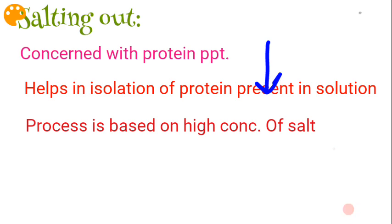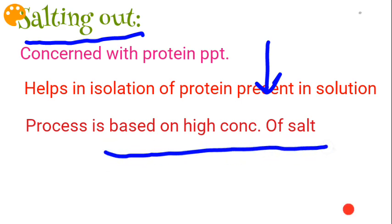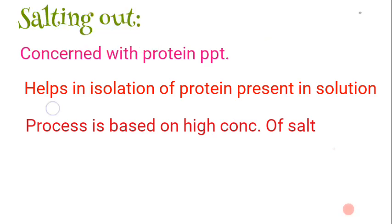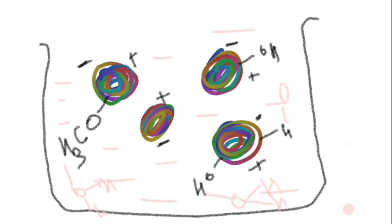Salting out is concerned with reducing the solubility of proteins in solution. We use this process to separate and isolate a particular required protein from the solution. The method relies on a high concentration of salt — if you want to isolate your particular protein you have to use high salt concentration.